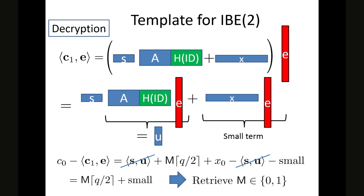To decrypt a message, we take the inner product of C1 and E. The inner product of X and E is a small term because X and E are short vectors. Then, to retrieve the message, we subtract the inner product from C0 to obtain a quantity from which we can retrieve the message M, which is 0 or 1.